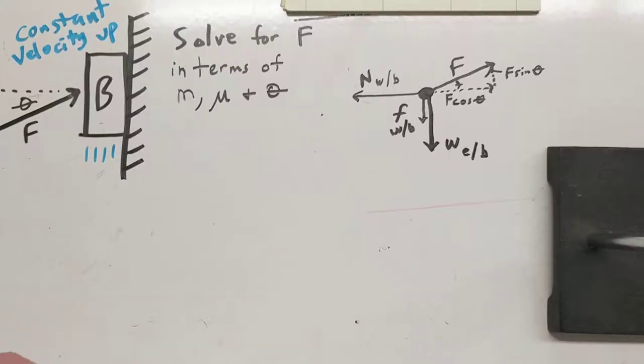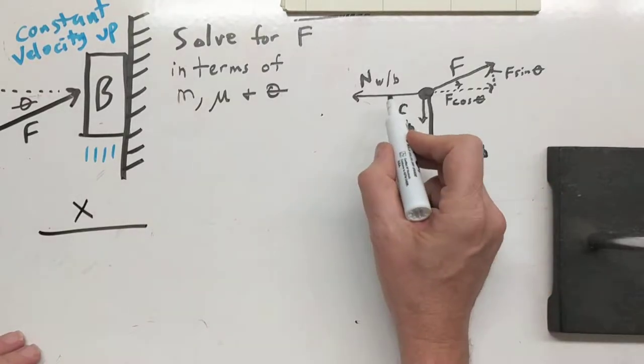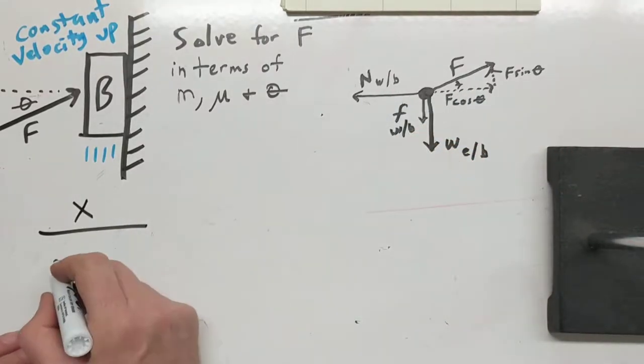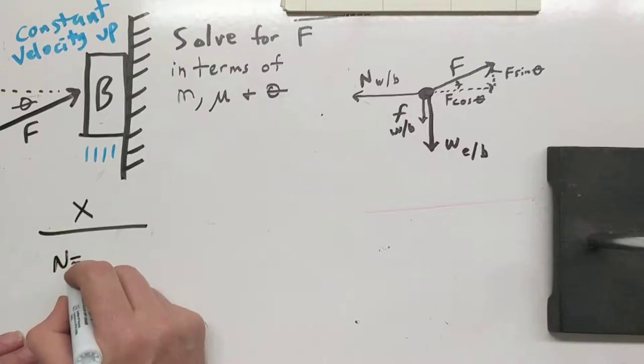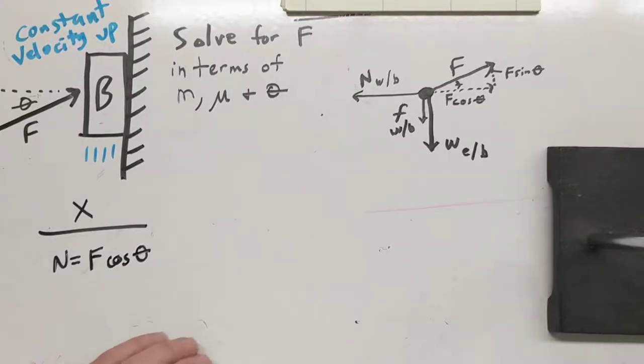So next up, we want to look at X's and Y's separately. So in the X direction, we've only got these two forces here, so we know that the normal force has to equal F cosine theta. That's going to come in handy later.